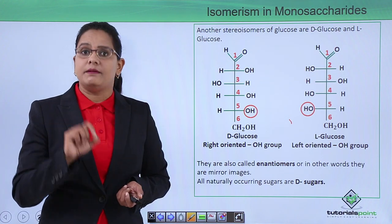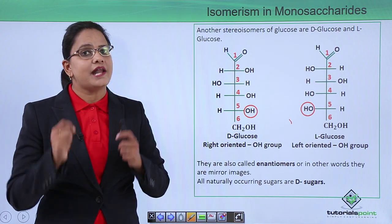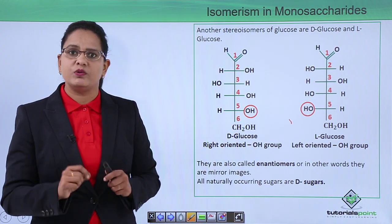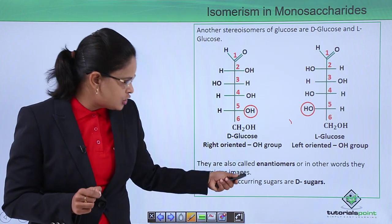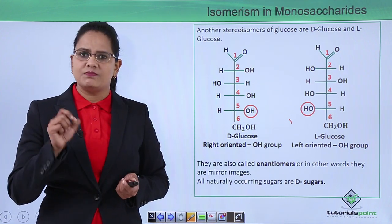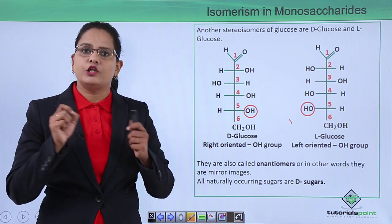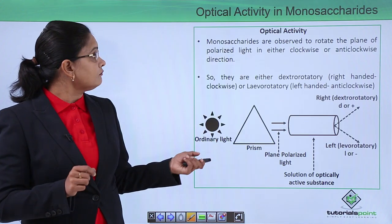Also, D and L sugars are mirror images of each other, so another term we can give them is enantiomers. Enantiomers means that the two compounds are mirror images of each other.